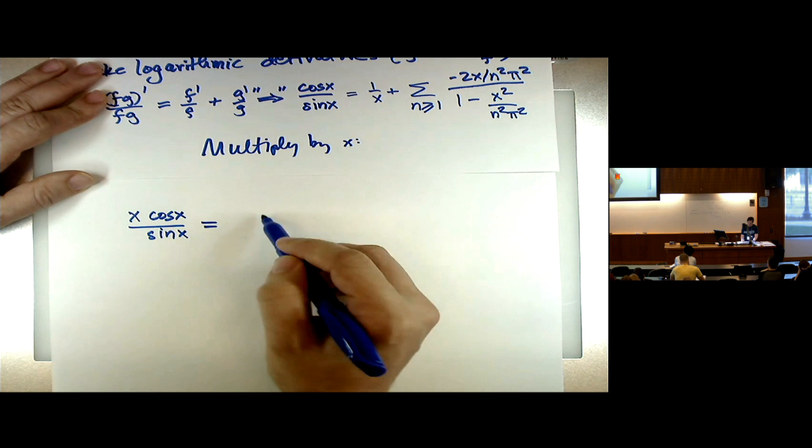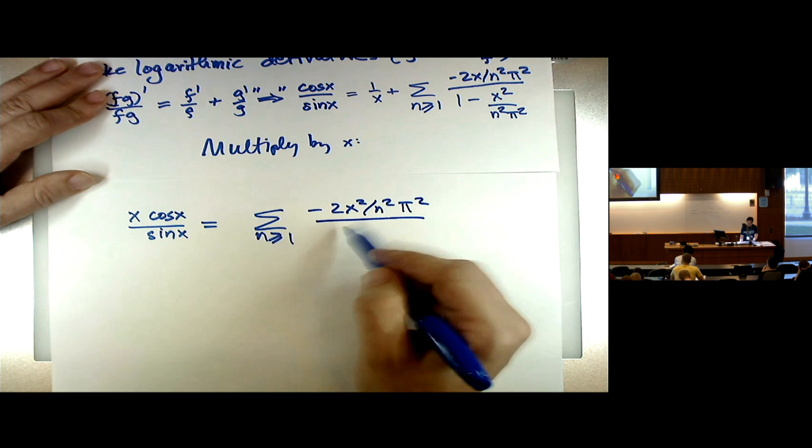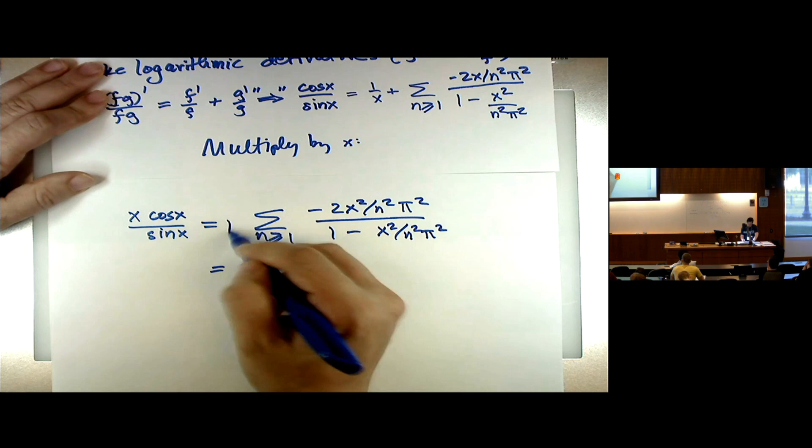And so if we take out the factor, we have an expression of the form r/(1 − r). Using the geometric series, r/(1 − r) = ∑_{m≥1} r^m. So I'm going to get 1 − 2·∑_n ∑_m (x²/n²π²)^m. And then we switch the order of summation.